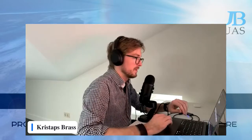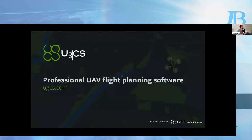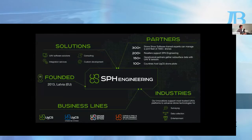Thank you Jonathan. So, UGCS is professional flight planning software for drones. The name UGCS — the abbreviation — stands for Universal Ground Control Software. It all started back in 2013. The company itself is called SPH Engineering and we have four main business lines, with UGCS being the oldest.